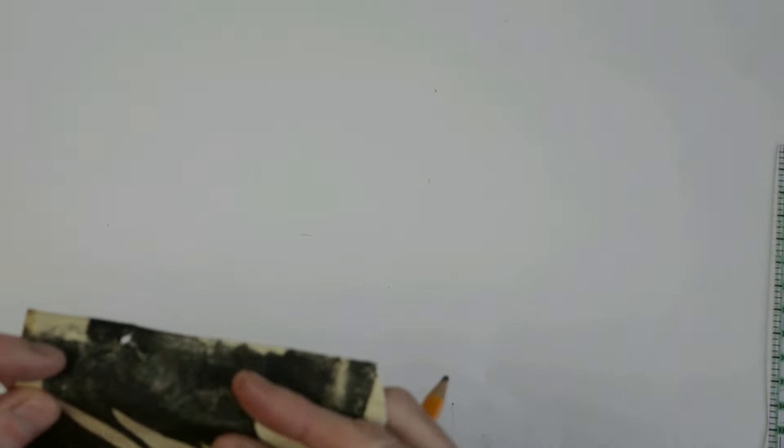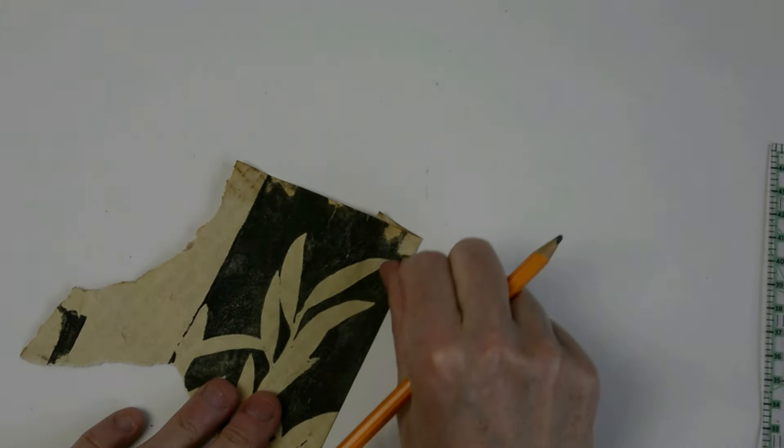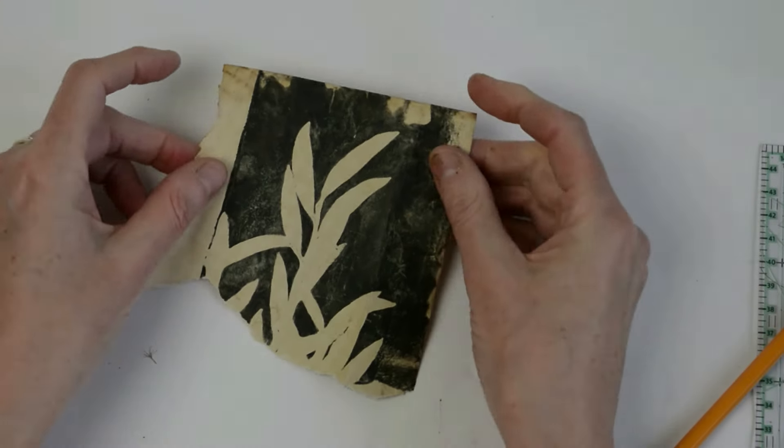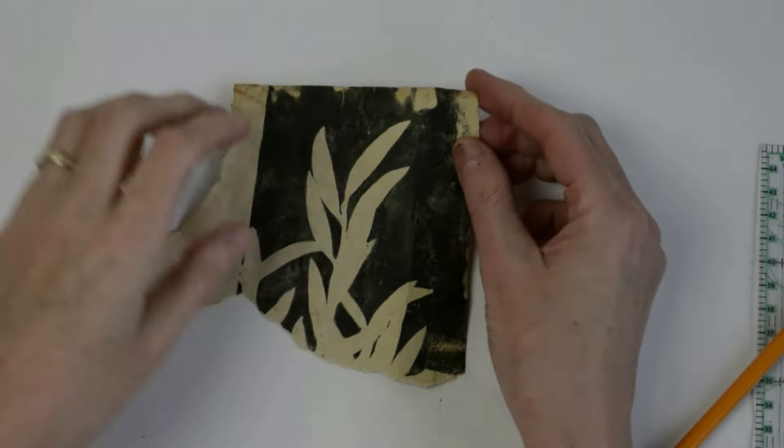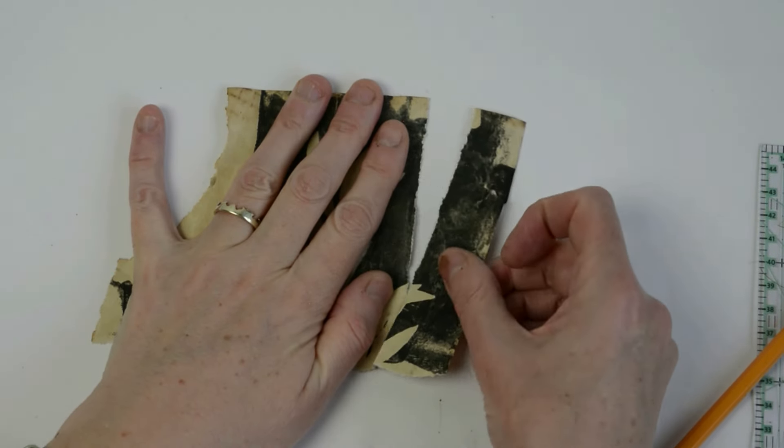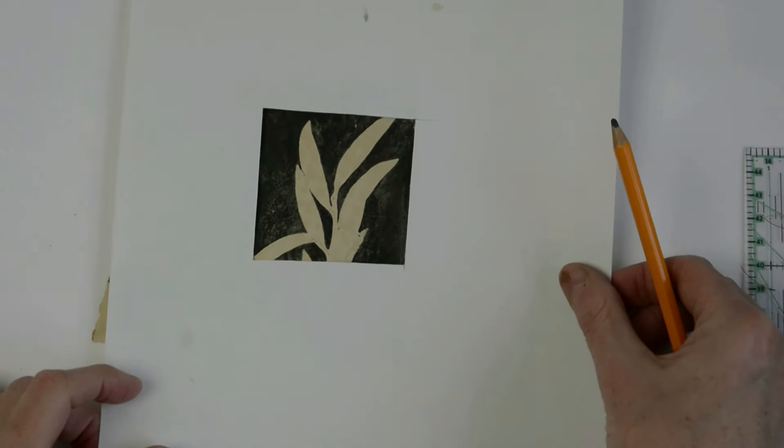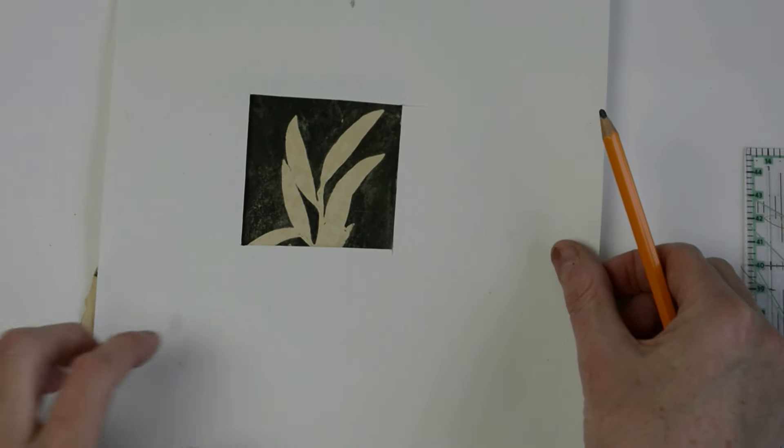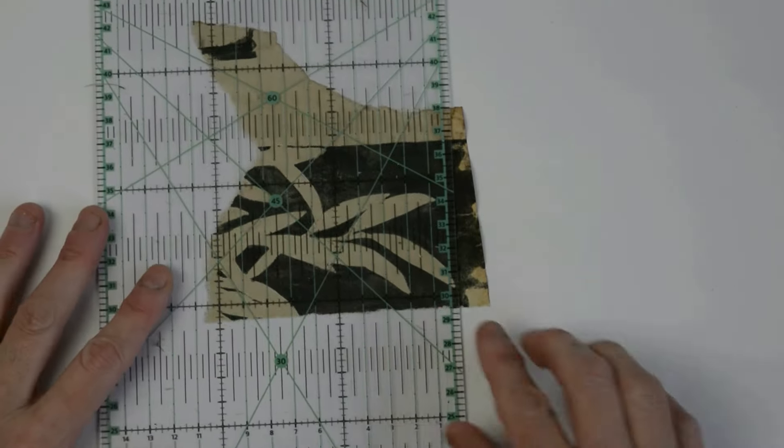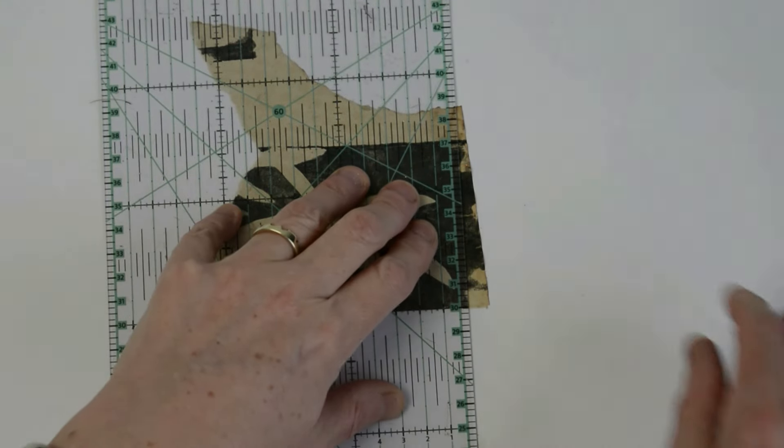By finger creasing the paper. Now we all know different papers rip slightly differently and some more successfully than others. So make sure you give it a really good finger press. I like to run the back of my nail down the fold before trying to rip the paper.